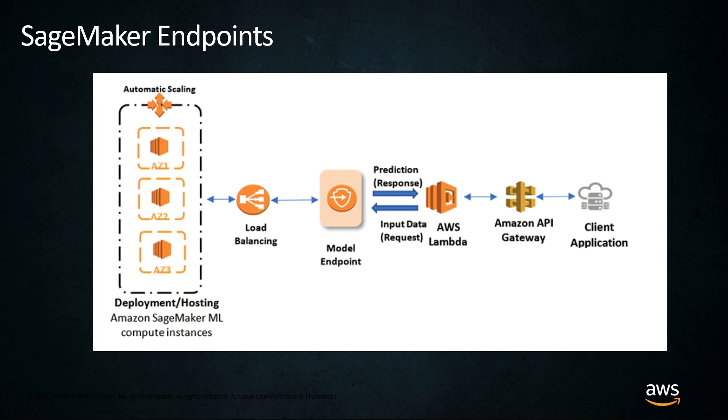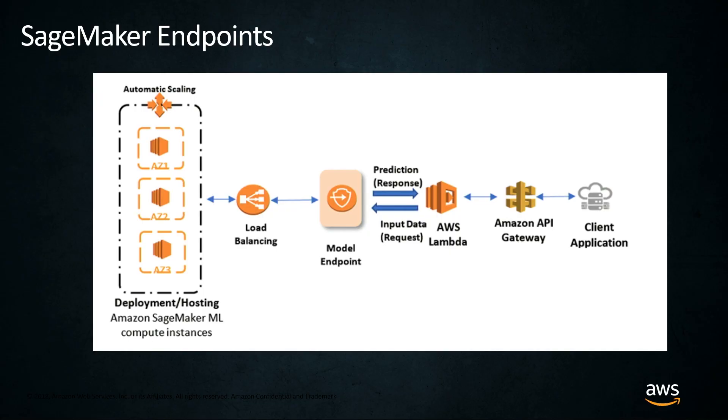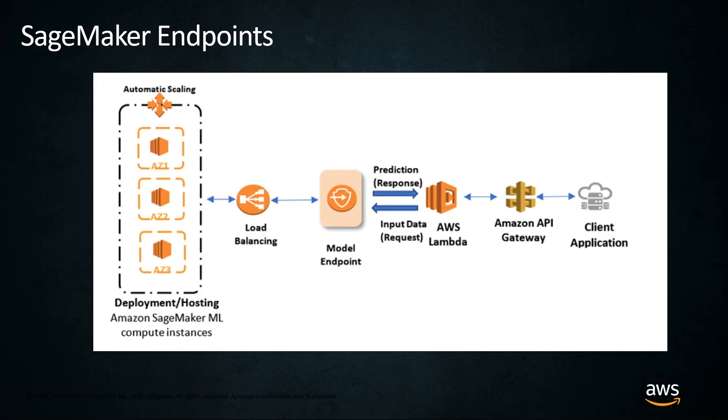When you specify model.deploy in the SageMaker Python SDK, that is a single line of code that you run just one time — run that cell. That's going to spin up a managed endpoint with multiple EC2 instances. Each EC2 instance is going to have a web server that's able to respond to requests and it's going to have your model artifact, so each instance is serving prediction responses. Those are going to be handled by a load balancer, which takes care of health checks, making sure that your instances are up. All of those sit behind your model endpoint.